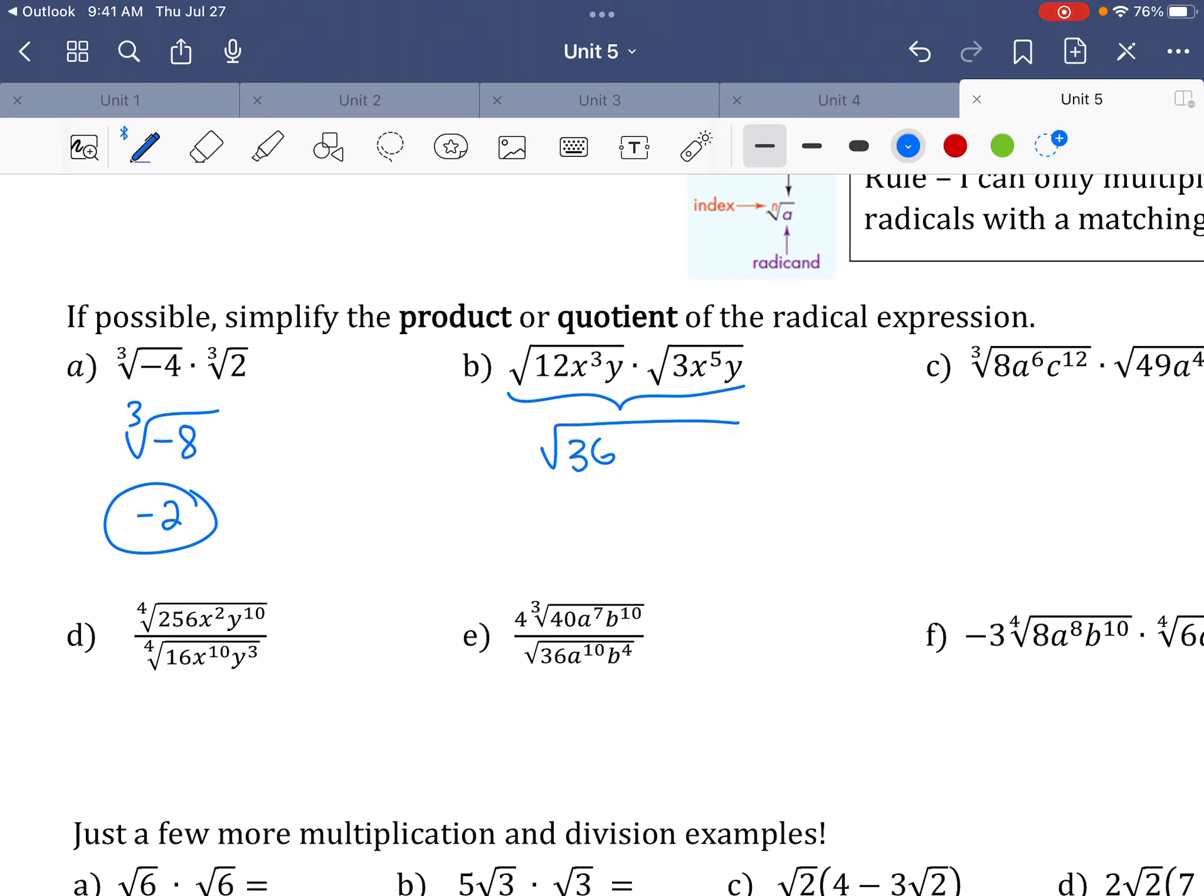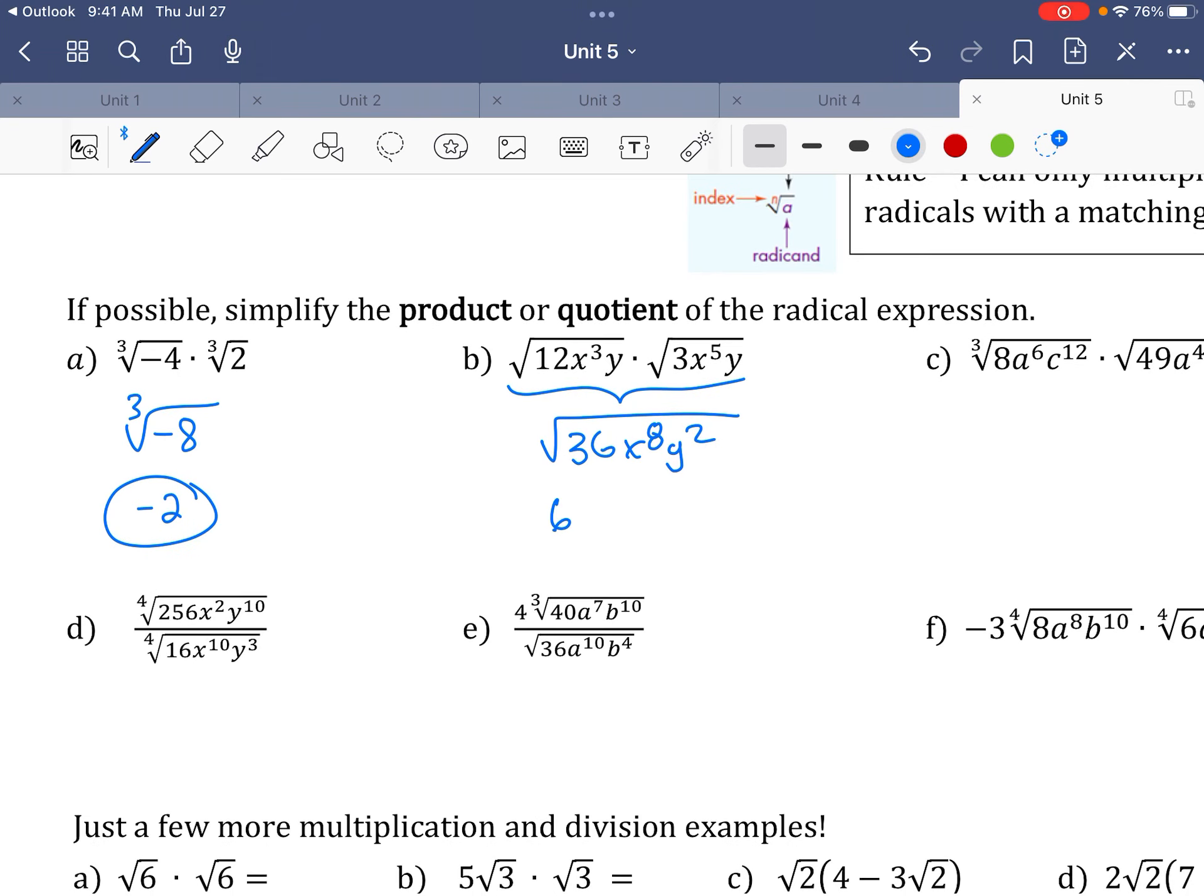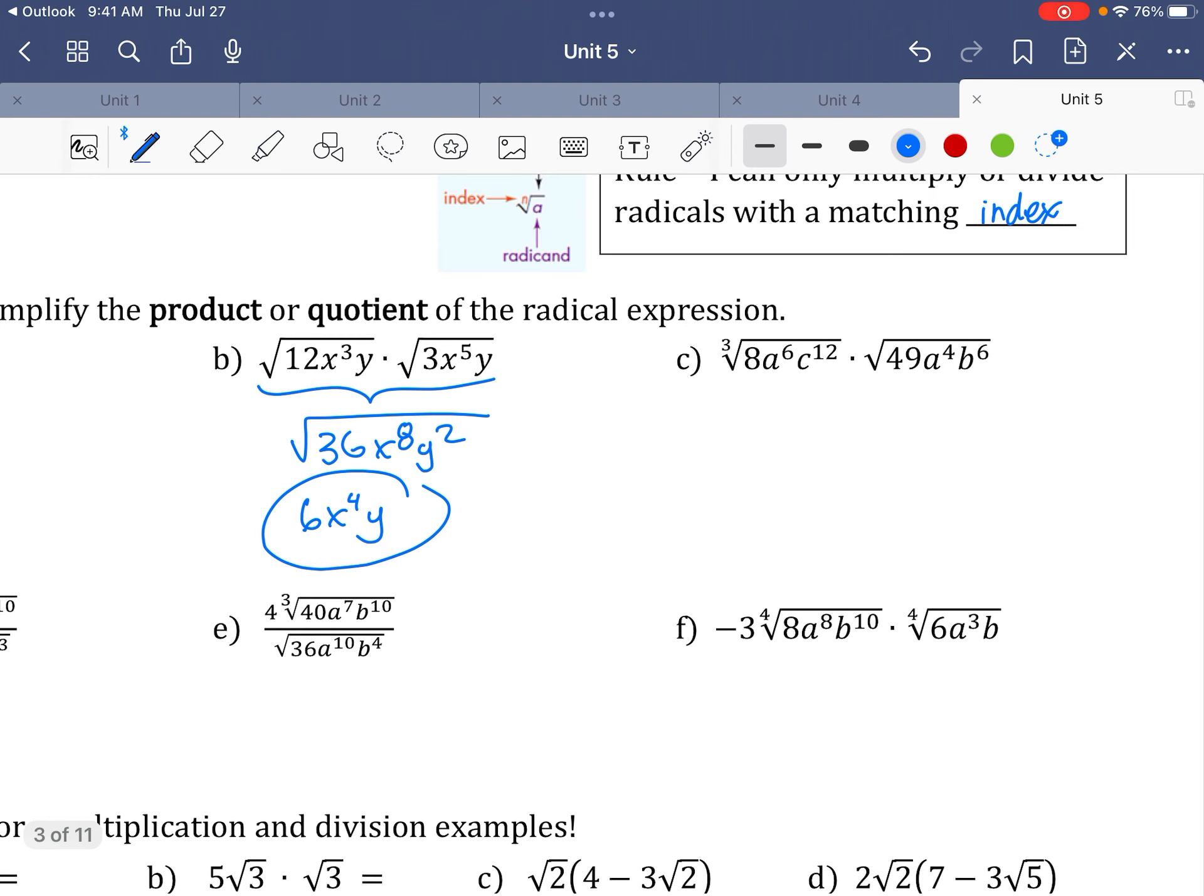All right, here, I'm going to put it together first. I have one big square root. 12 times 3 is 36. x3 and x5 make x8, and y and y make y squared. Now look at that. The square root of 36 is 6. 2 goes into 8 four times, and 2 goes into 2 once, so it was a perfect square.